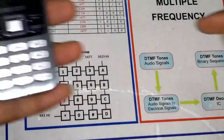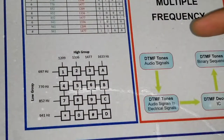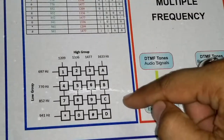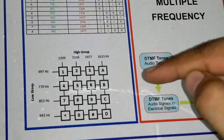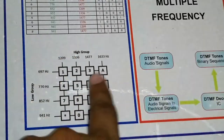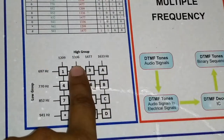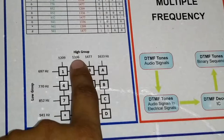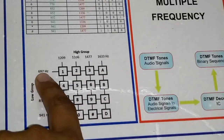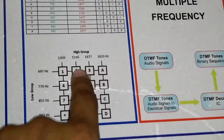The mobile phone does not have ABCD, but the old box landline phone, when you used to press the button, had ABCD options. For example, if I press 2, the high group frequency is 1336 Hz and the low group frequency is 697 Hz. These two frequencies combine and the digit 2 is recognized.